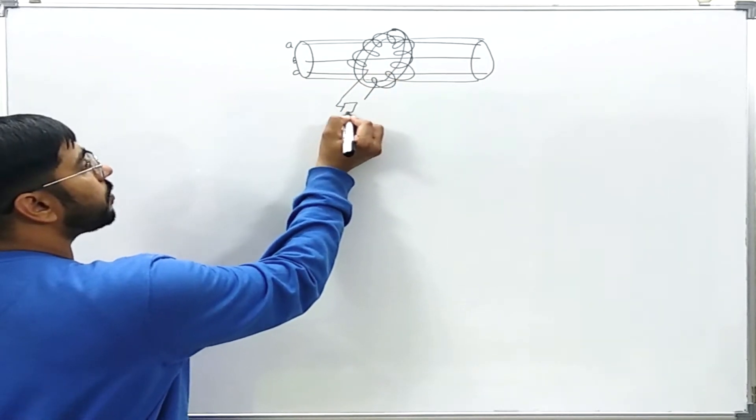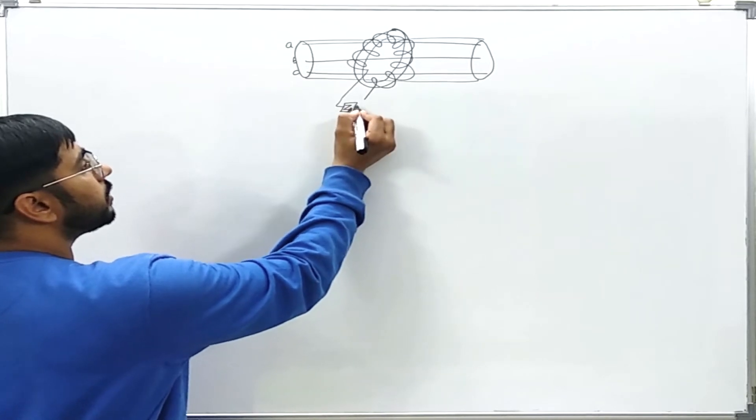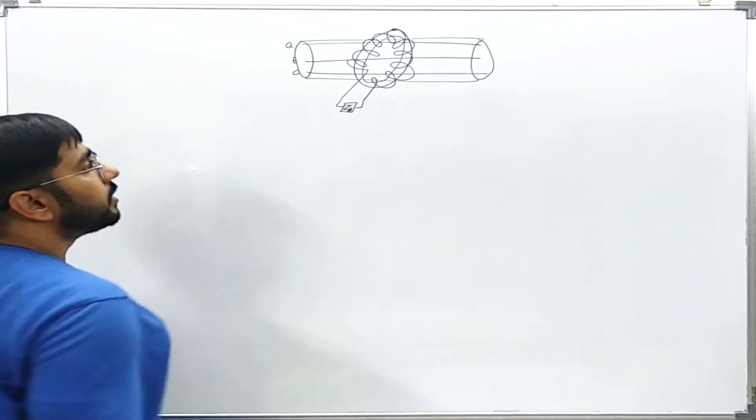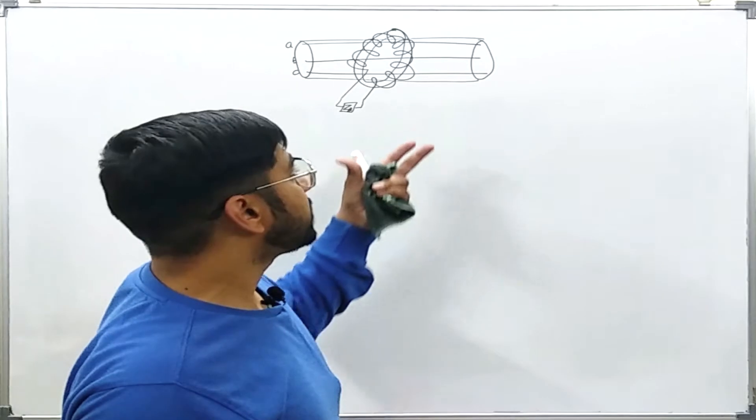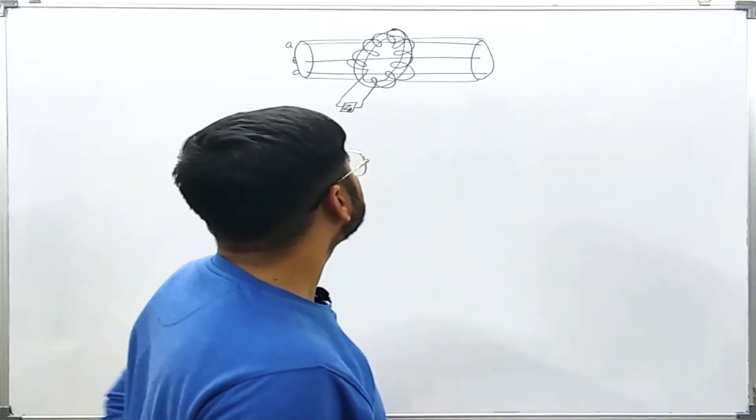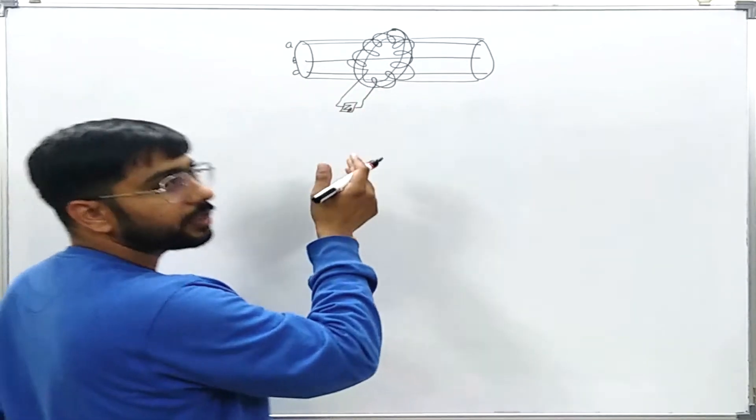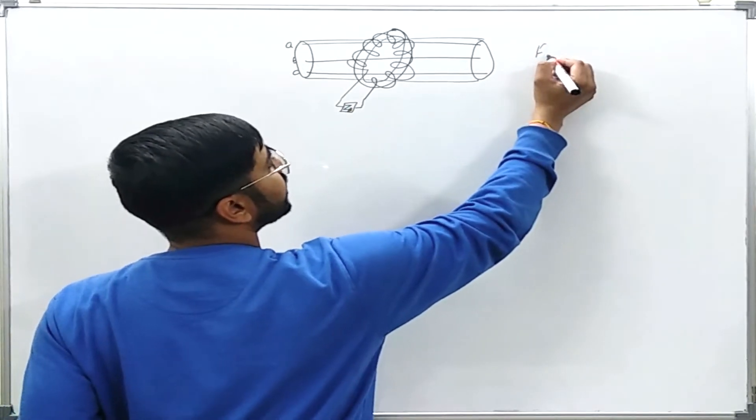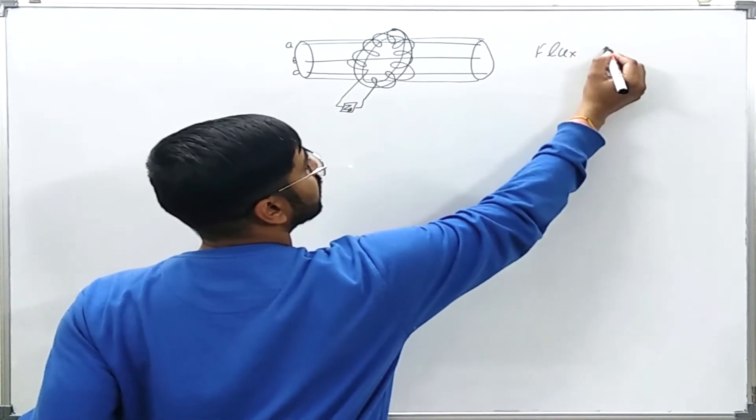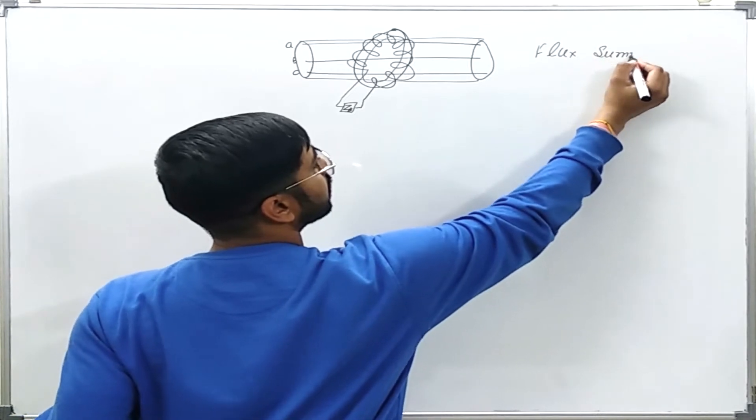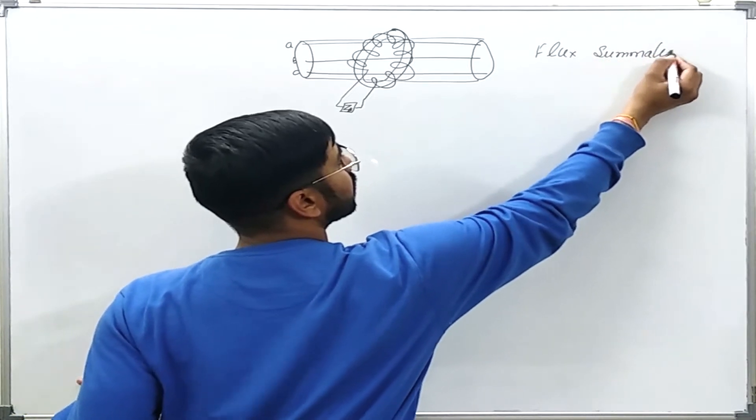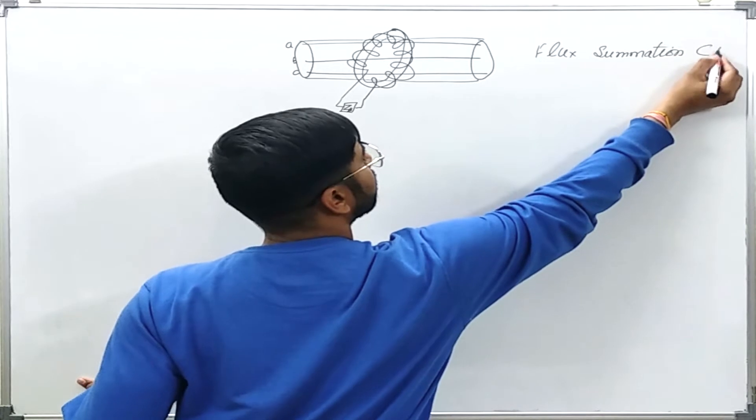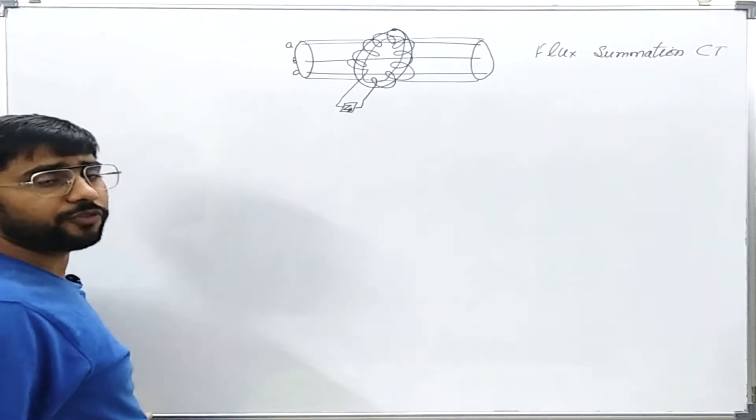So, this relay or burden what it will see? What will be the picture seen by this? This kind of CT in toroidal form is usually called flux summing CT. Why this name for this kind of CT?